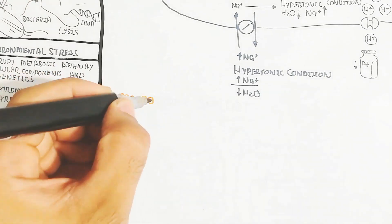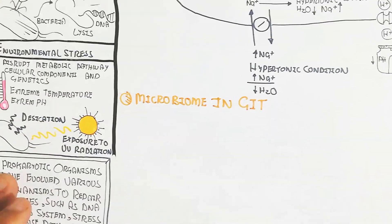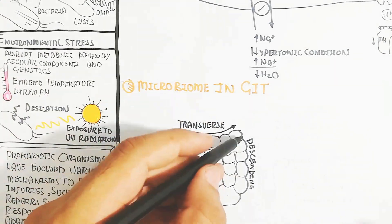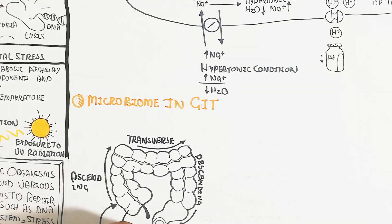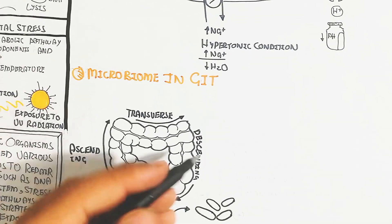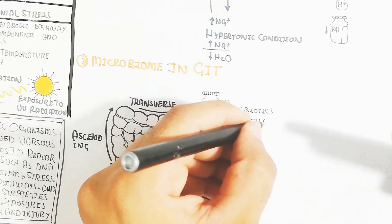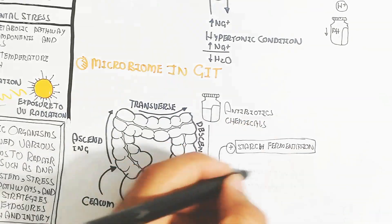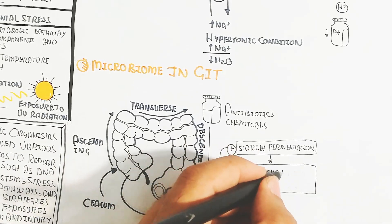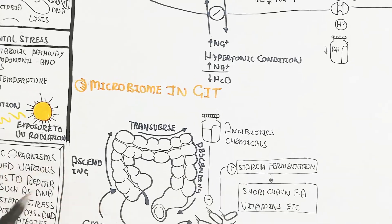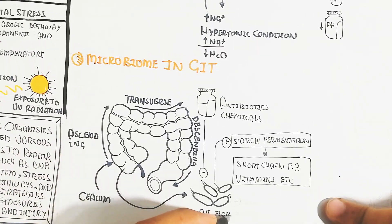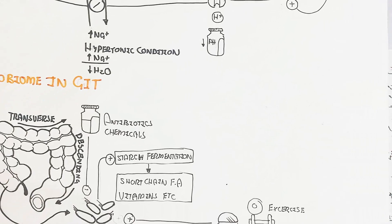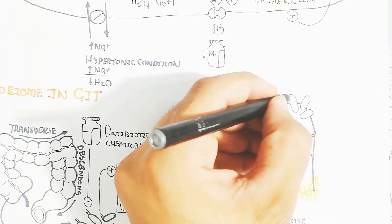An important note is the gut microbiome: the large intestine, particularly the cecum, contains an important microbiota colony called gut flora. The ascending, transverse, descending, and sigmoid colon are also relevant. Antibiotics and chemicals inhibit this gut flora. The gut flora produces short-chain fatty acids from starch fermentation, as well as vitamins E, A, and K. Disruption of these mechanisms leads to vitamin deficiency.